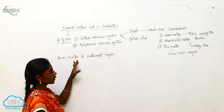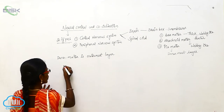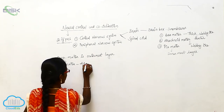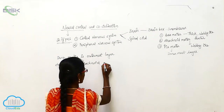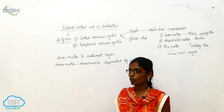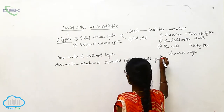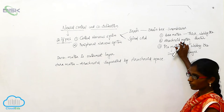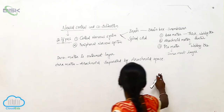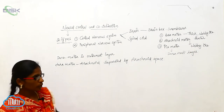The Duramater and Arachnoid Matter are separated by the Arachnoid space. The Arachnoid Matter and Piamater are separated by the subarachnoid space.